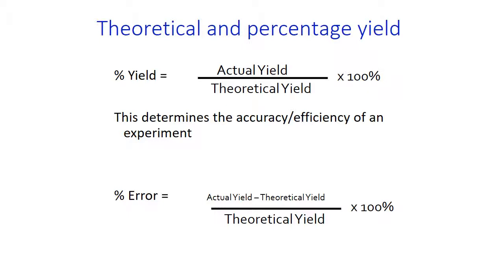The percentage error is going to be the actual yield — the yield you get — minus the yield you expect from your calculations, divided by the yield you expect from the calculations, times 100.